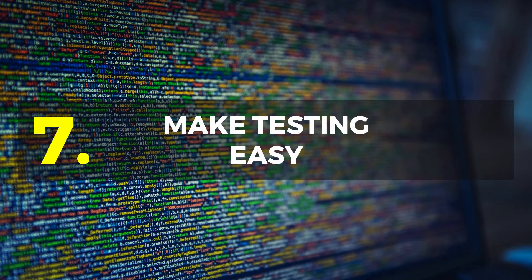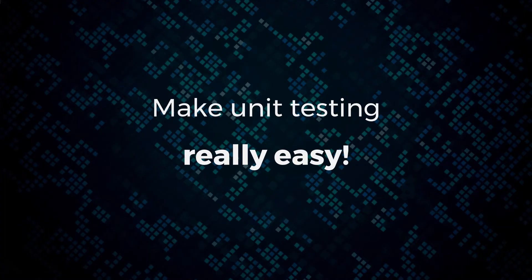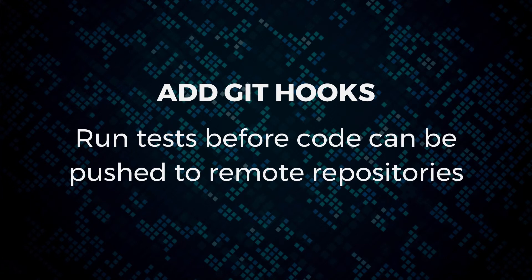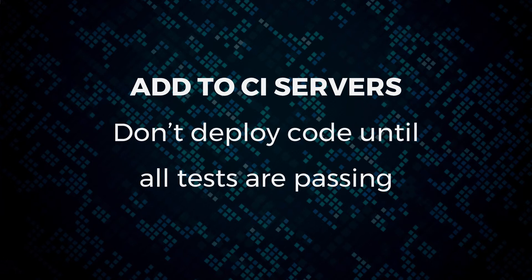Number seven: ultimately make testing easy — it has to be really easy. You need to be able to run it from a terminal. All your developers should be able to run tests using just a command window. From your task runner — in JavaScript you might use Gulp or Grunt — make sure you can run your tasks from there. Or run them automatically as part of your build process. Add Git hooks so tests run before code can be pushed to remote repositories, preventing broken tests from reaching master branches. And add tests to your CI server so you don't deploy code before all tests pass — if any tests fail, the deployment stops.